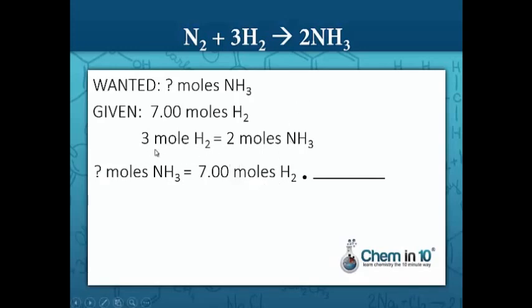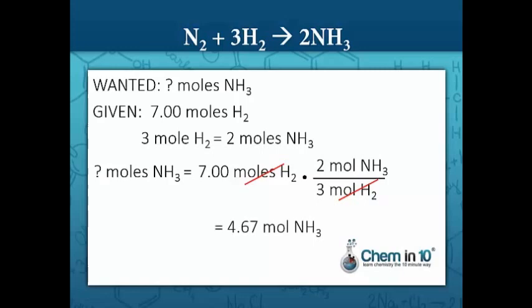We find the part that has moles of hydrogen — three moles of hydrogen — and put that in the denominator, which is equal to two moles of ammonia in the numerator. Notice the units moles of hydrogen cancel out and we're left with moles of ammonia, which we're trying to solve for. We multiply the numerators together and divide by the denominators and we get 4.67 moles of ammonia.